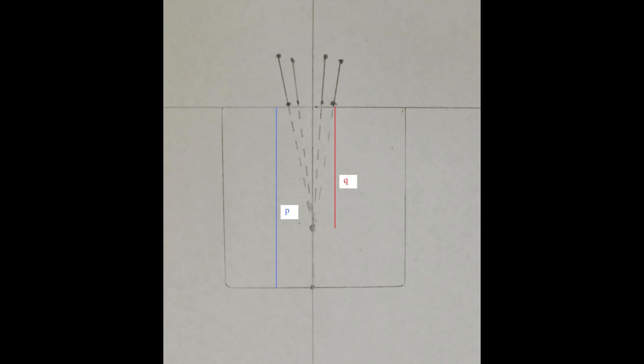For good measure, trace a couple more rays. The actual depth p is the depth of the glass. The apparent depth is the distance of the virtual image to the surface of the glass. The ratio of p to q should be approximately n, the index of refraction of the glass.